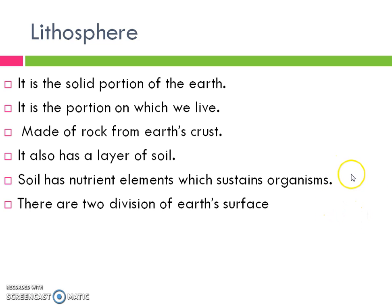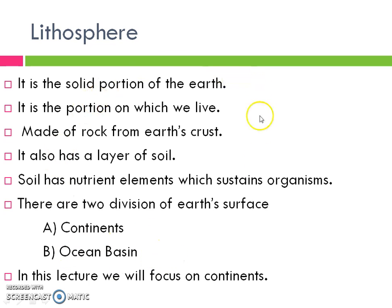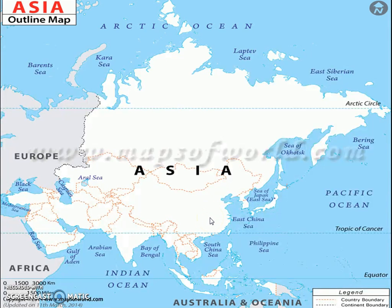Soil has nutrient elements which sustain organisms. There are two divisions of earth's surface: one is continents and the other is ocean basin. But today we are going to focus on continents only. Do not get frightened if you don't know what earth's crust or ocean basin is — I will cover each and everything in our future lectures. Now, moving on to Asia.